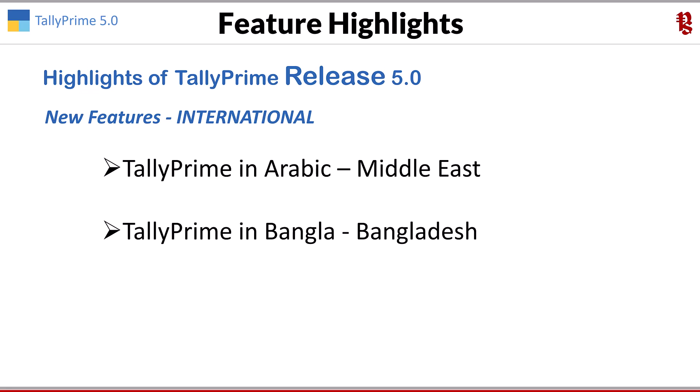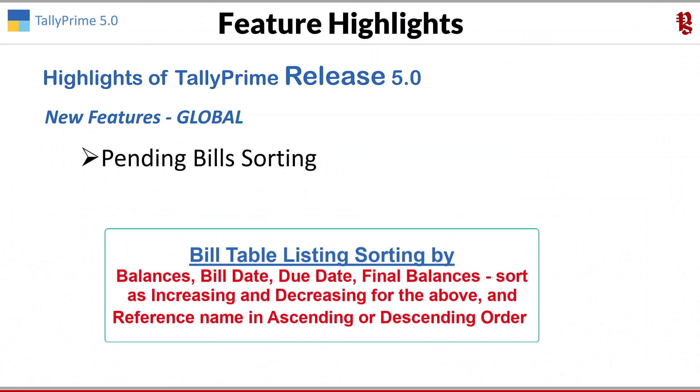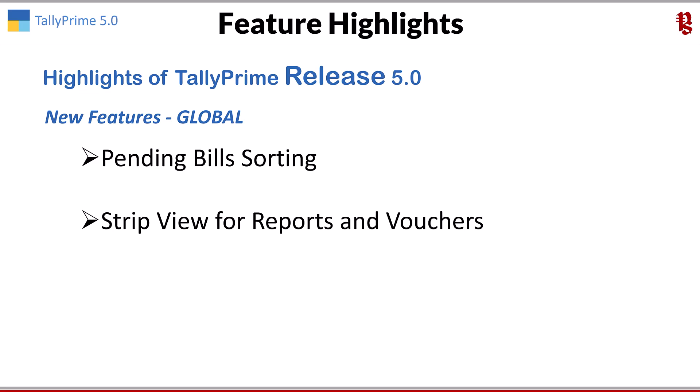Let's move on to Section 3, which covers features applicable to both India and international. The first is pending bills sorting — an efficient payment management system with various sorting methods. You can sort bills in the bills table by balance, bill date, due date, or final balance in increasing or decreasing order, and also sort by reference name in ascending or descending order. Next is a long-awaited feature: stripe view for reports and vouchers, which helps you read reports more easily and faster.